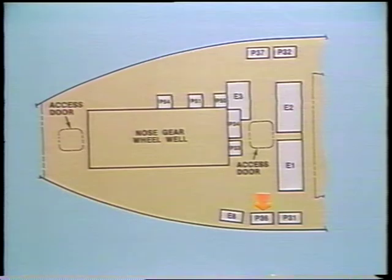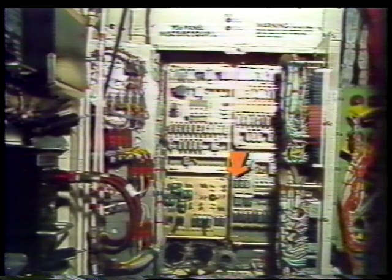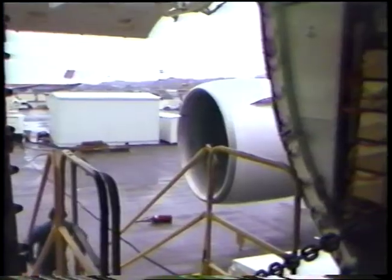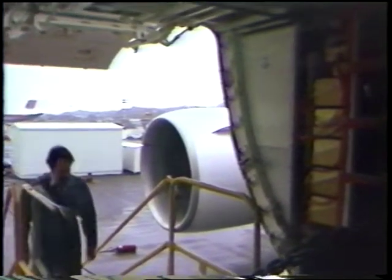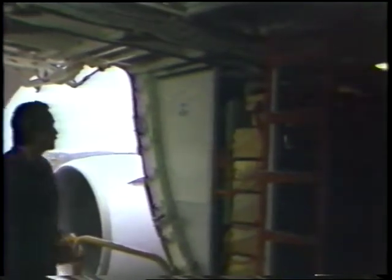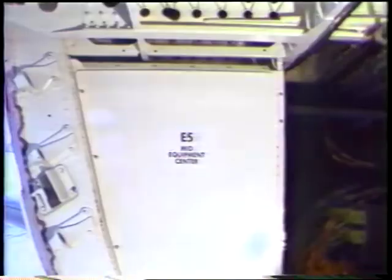The air ground relay K124 is located in the left miscellaneous electronic equipment panel P36 in the main equipment center. Located in the mid equipment center is the ADF receiver in rack E5-1.